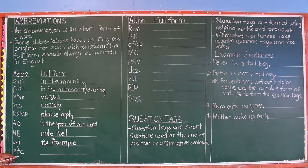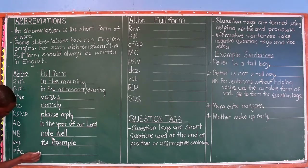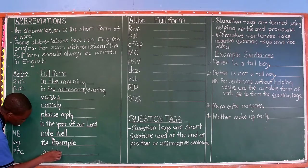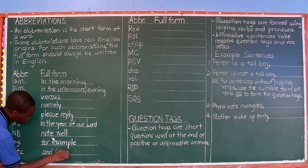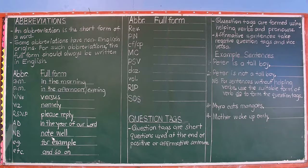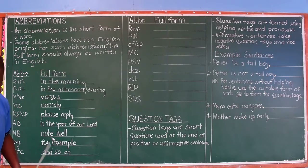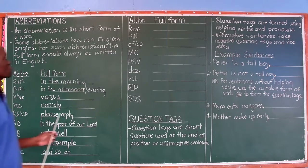ETC — that is 'et cetera'. It is nowadays an English word. We prefer the full form which in English is 'and so on'. Be careful not to write 'and so on' as one word. There are three words used as the full form of ETC: 'and', 'so', 'on'.